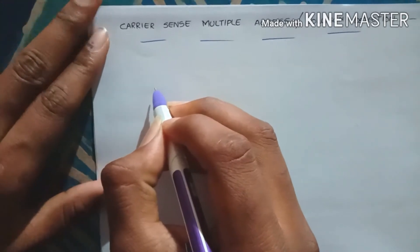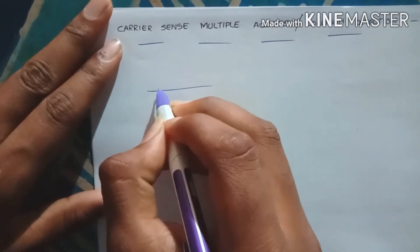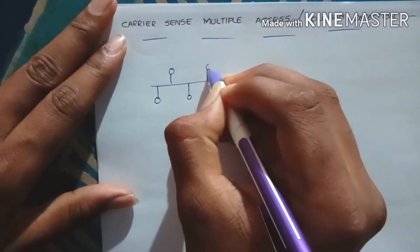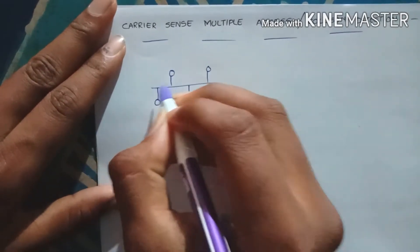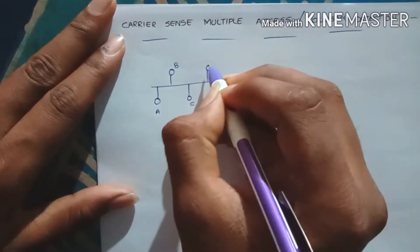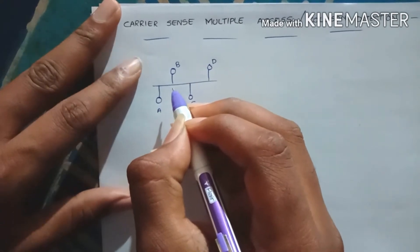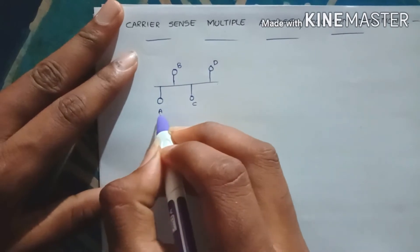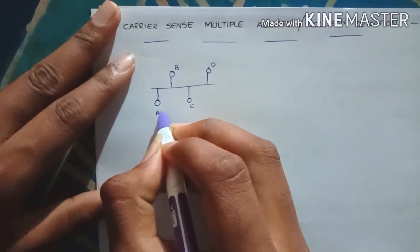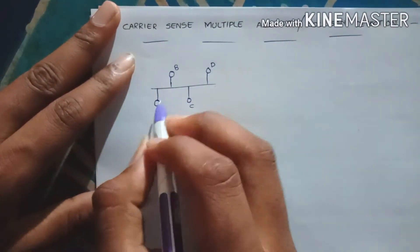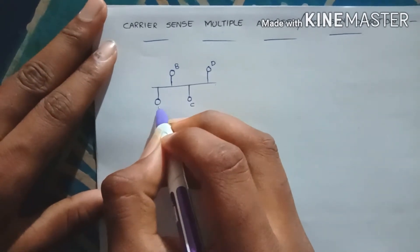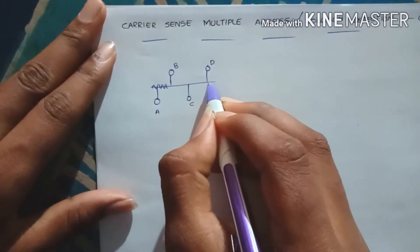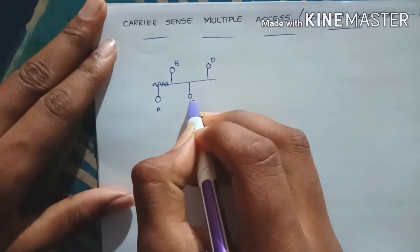Here we are using an Ethernet connection with a shared media. We are taking four stations: one, two, three, four — labeled A, B, C, D. This is a shared media where we transfer data. We will take station A and send data to our destination, station D. First, we have to load A with some data on this channel.